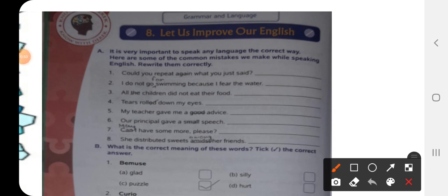Could you repeat again what you just said? This is the first sentence and here in this sentence you can see that repeat and again both the words repeat and again means same because repeat also means doing it again and again.